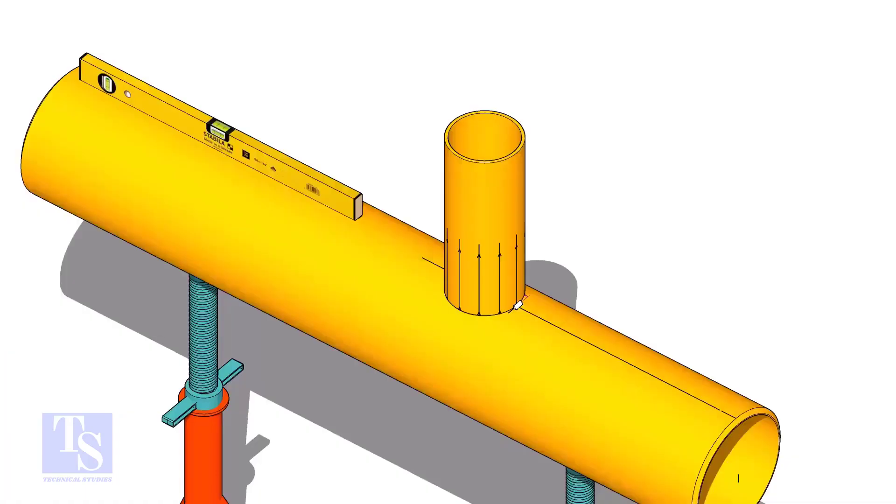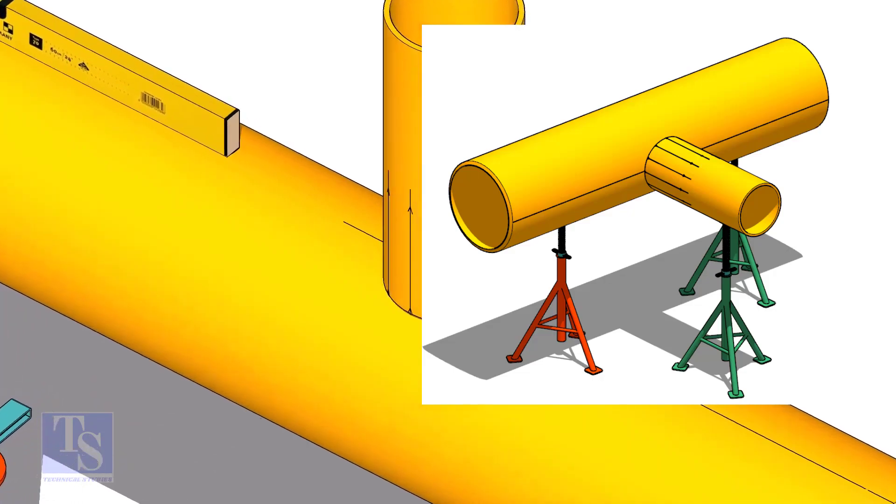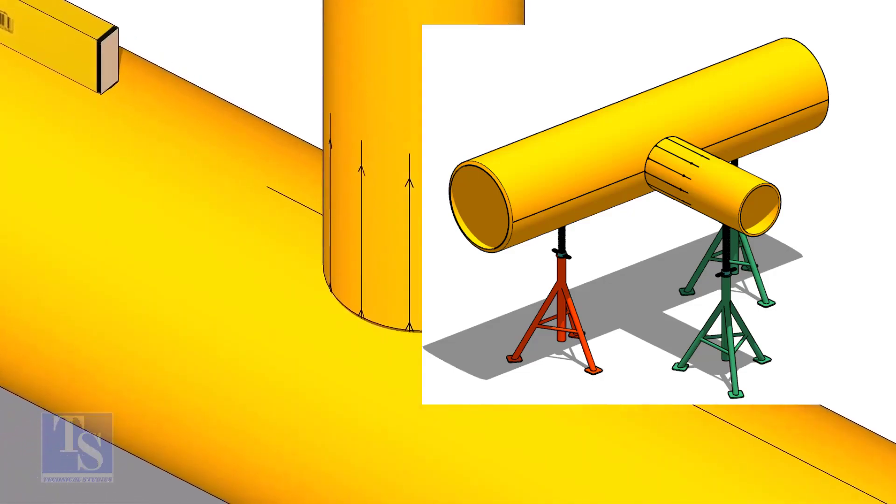Tack weld the branch on the header just to stand it vertically. If the pipes are large, you can do it in the horizontal position also.